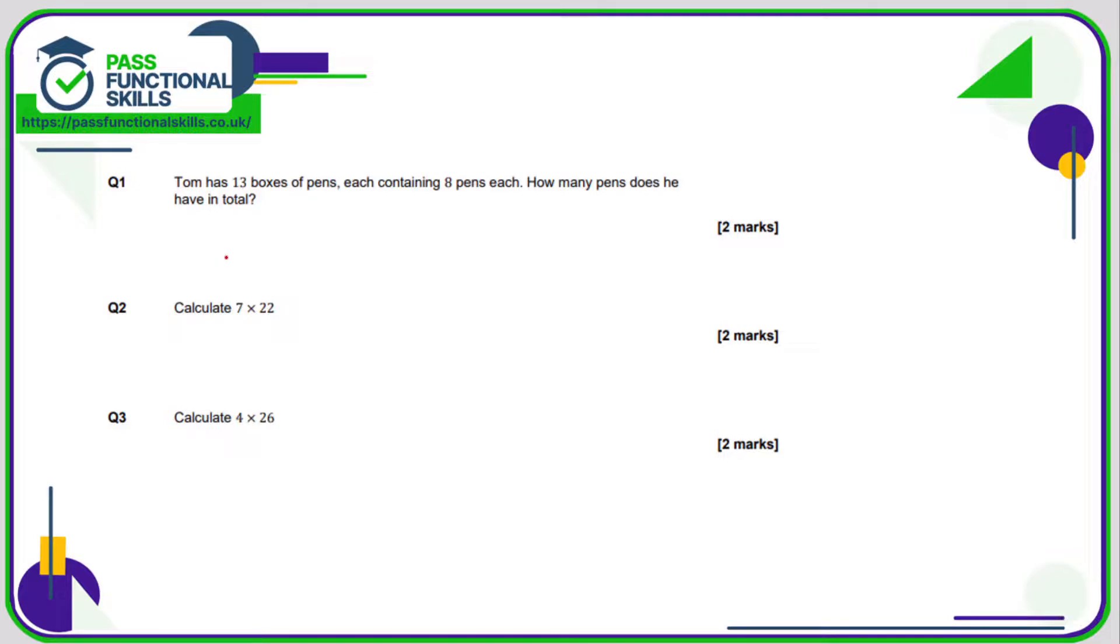Question number 1: Tom has 13 boxes of pens which have 8 pens in each, so how many does he have in total? The calculation is 13 times 8. I would use a written method like this. 3 times 8 is 24, 4, carry the 2, 1 times 8 is 8, plus the 2 is 10, so in total 104.